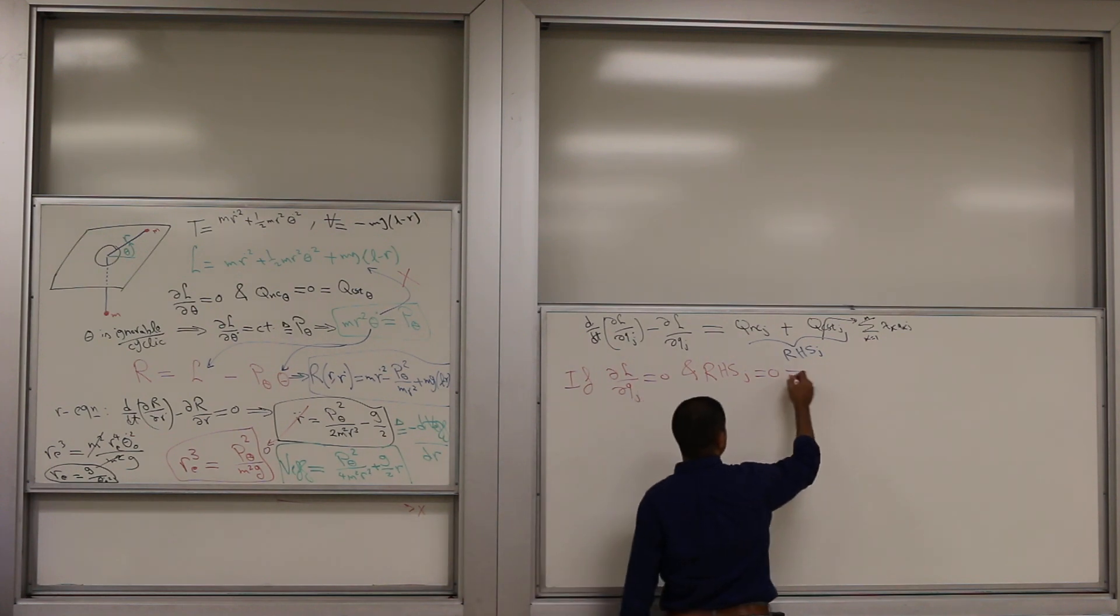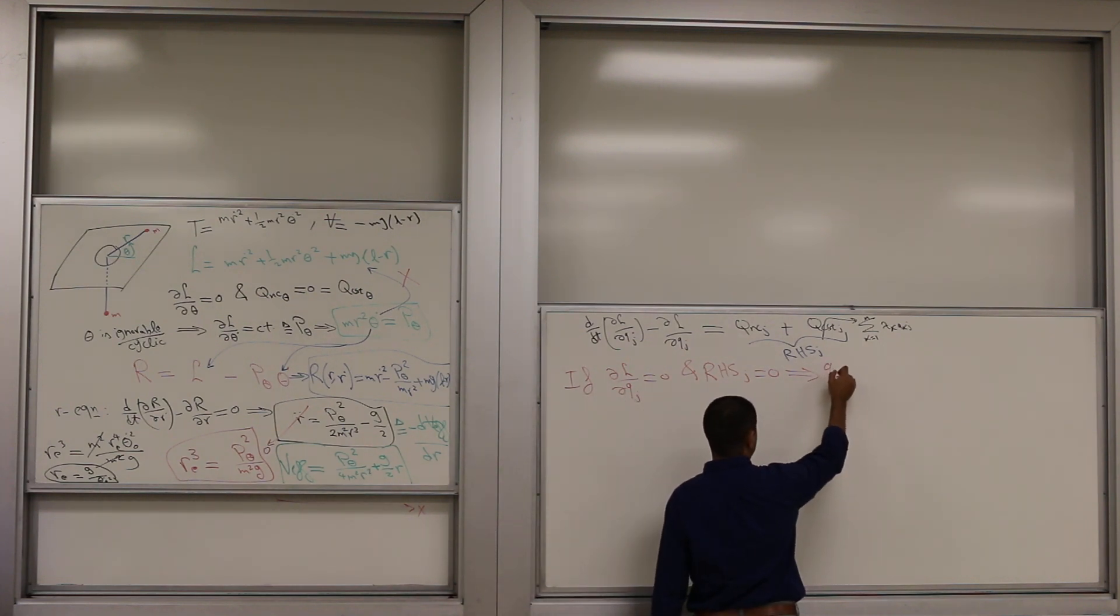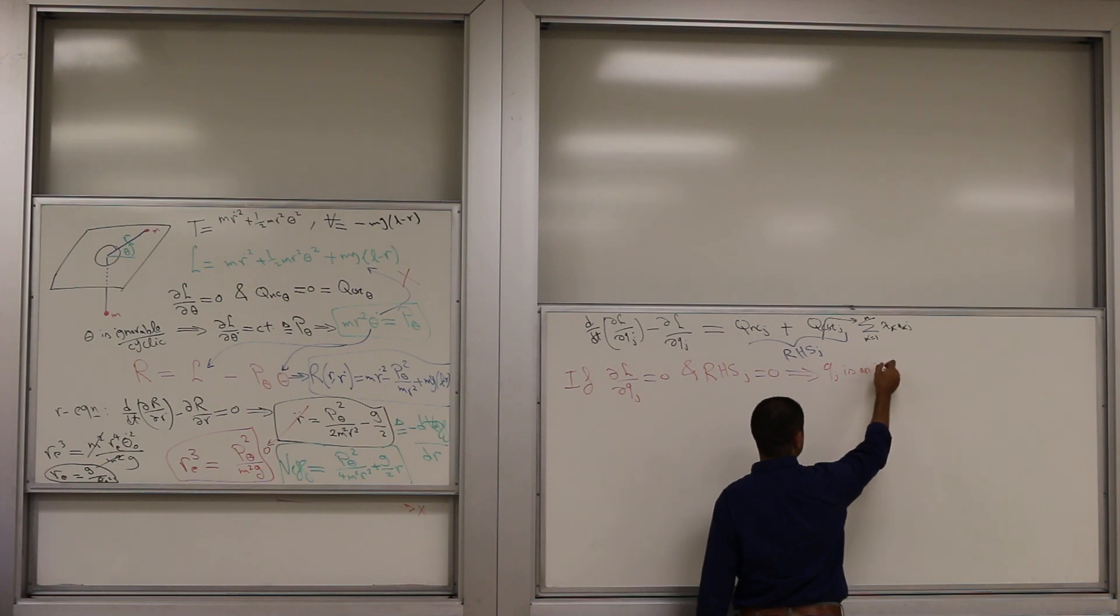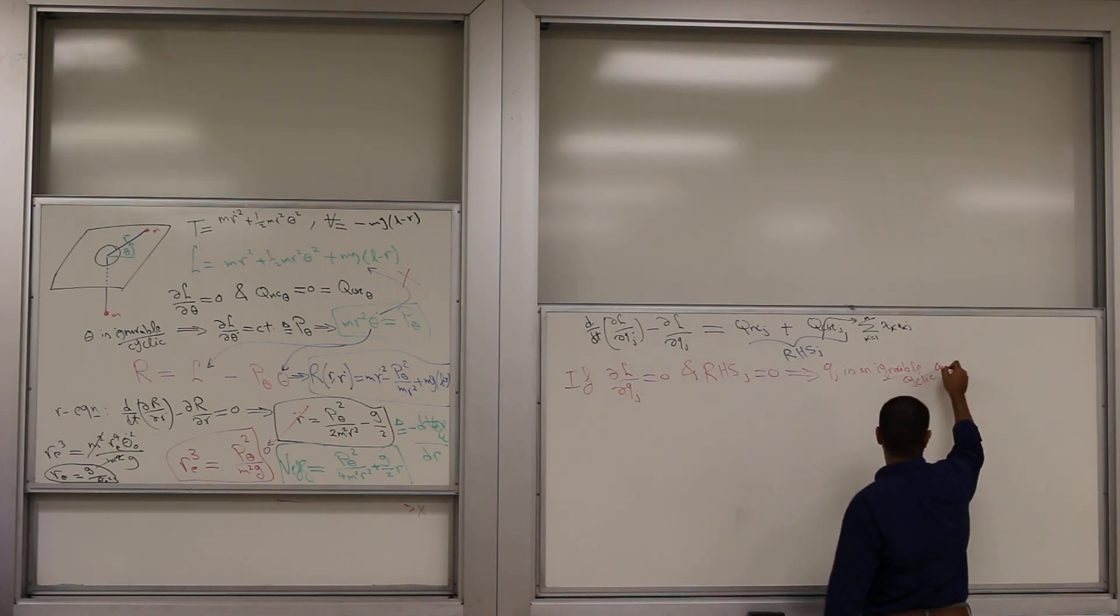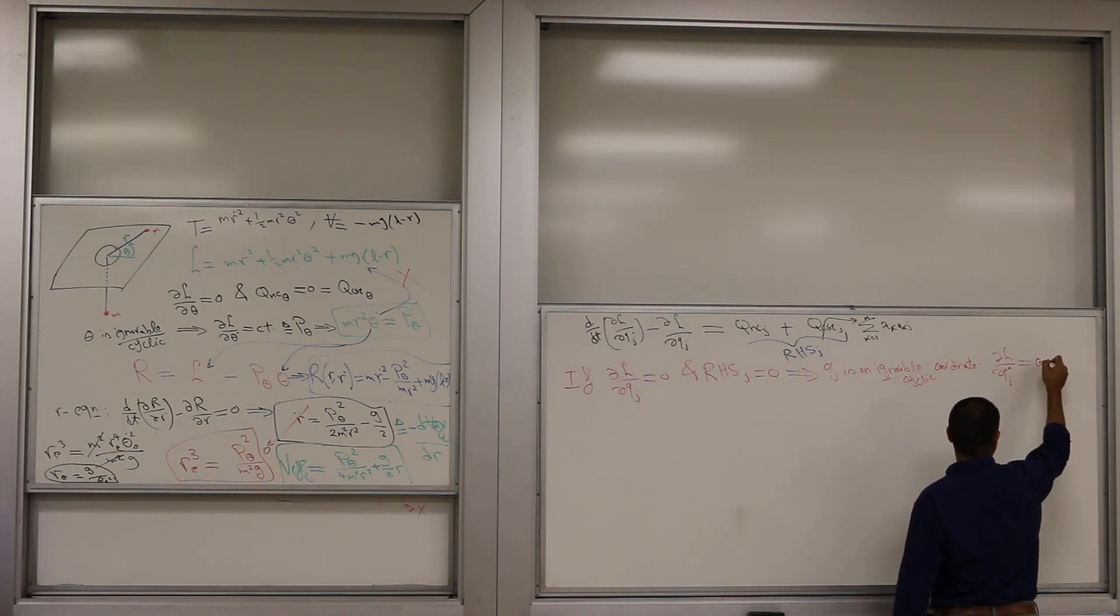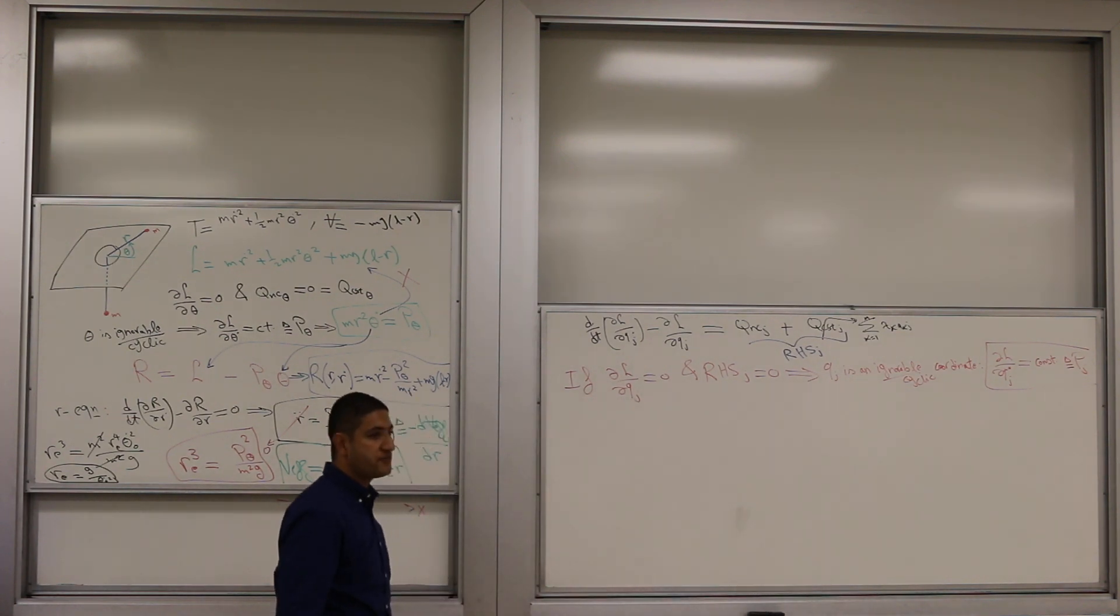So you immediately get d by dt for something is zero, which means that this thing is constant. And in this case we call qj an ignorable coordinate or cyclical. The implication is that partial L partial qj dot, this guy is constant. And we're going to denote it by pj because it really represents the corresponding momentum. Okay, this is constant, so it gives you a means of identifying conservation of momentum, whether it's linear or angular, without being an expert in the field, just this observation.